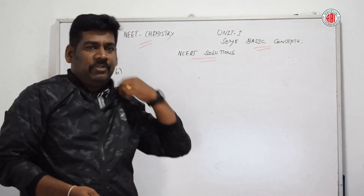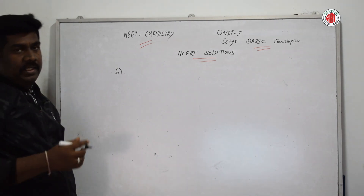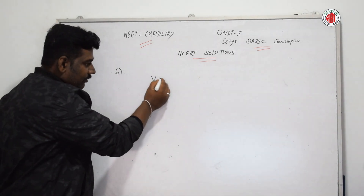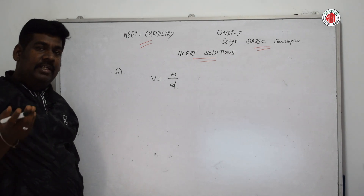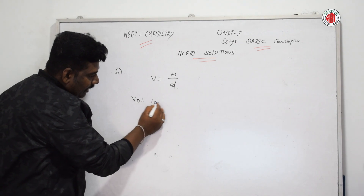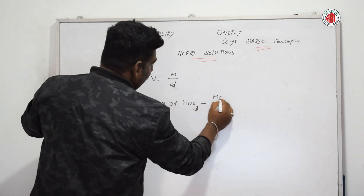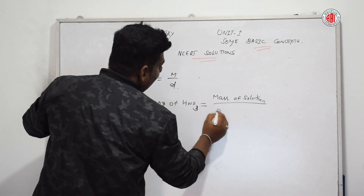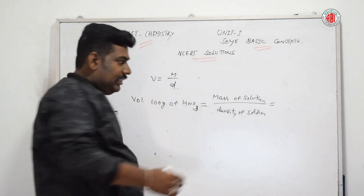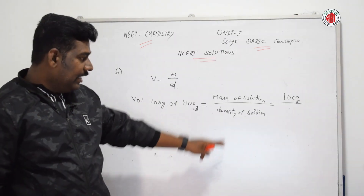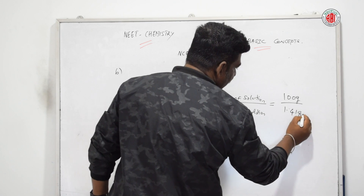Now we find the volume of 100 grams of HNO₃ solution. Volume = mass ÷ density. The mass of the solution is 100 grams and the density given in the question is 1.41 grams per mL.